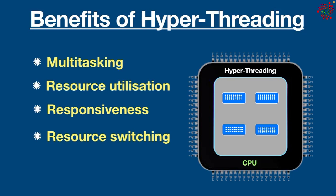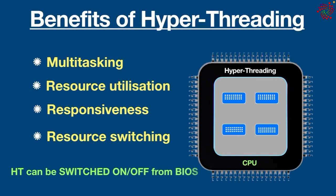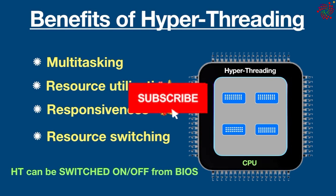Hyper-threading is enabled by default, but it can be switched on and off from the BIOS by setting hyper-threading technology to enable or disable. The bottom line is: if you want a faster computer but don't want to completely overload your hardware, hyper-threading could be the best answer to help you speed up your computer. Thanks for your time — make sure you hit the subscribe button for more videos.